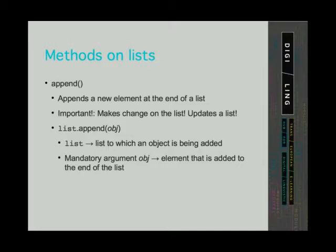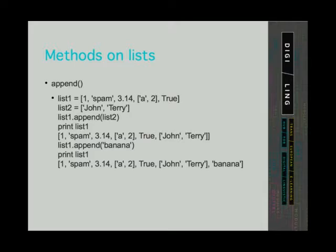The append method adds a new element at the end of a list. Calling this method will change the original list. The append method takes one mandatory argument, and that is the element we are adding at the end of the list. Let's look at an example. We have a list1 with 5 elements and list2 with 2 elements. If we call the append method on list1 and append list2, list1 will now have 6 elements: the 5 elements from the original list1, and the 6th element will be list2.